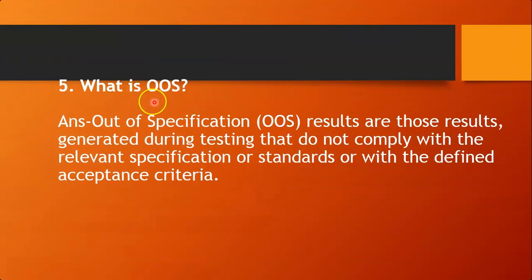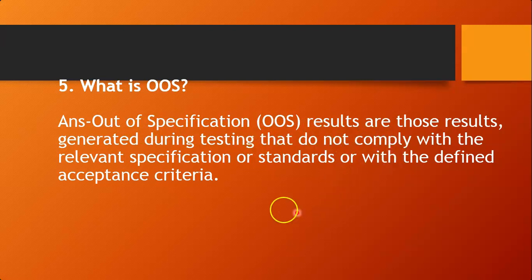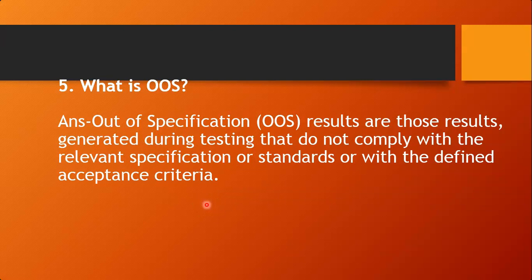The next question is: what is OOS? OOS means out of specification results. These are results produced during testing that do not comply with the relevant specification, standards, or the defined acceptance criteria. If results do not comply with the relevant specification or the defined acceptance criteria, then such results are called OOS — out of specification results.